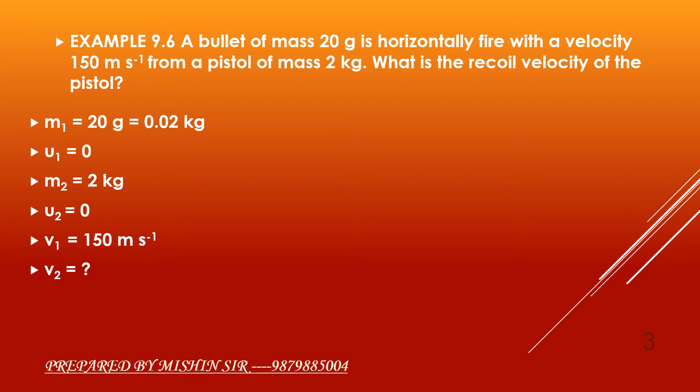As per the law of conservation of momentum, initial momentum will be equal to final momentum. So, we apply the formula M1U1 plus M2U2, which is equal to M1V1 plus M2V2. Now, we substitute the values, that is 0.02 into 0 plus 2 into 0 is equal to 0.02 into 150 plus 2 into V2.